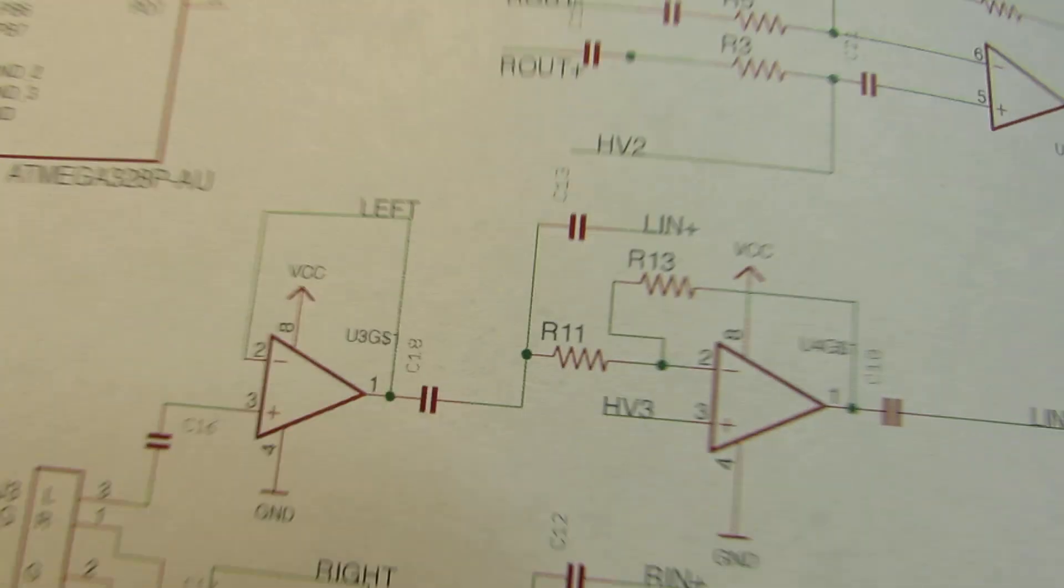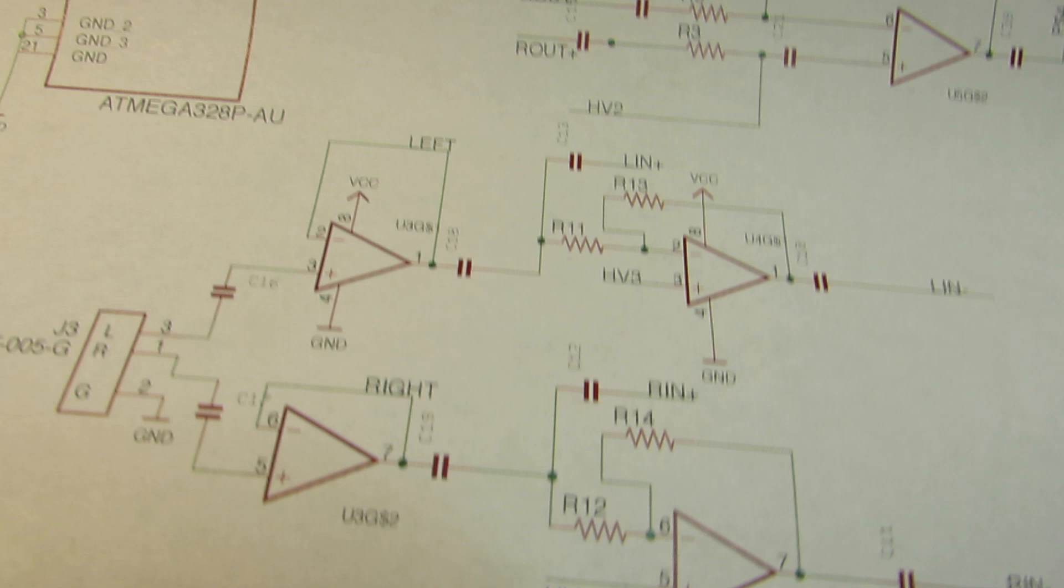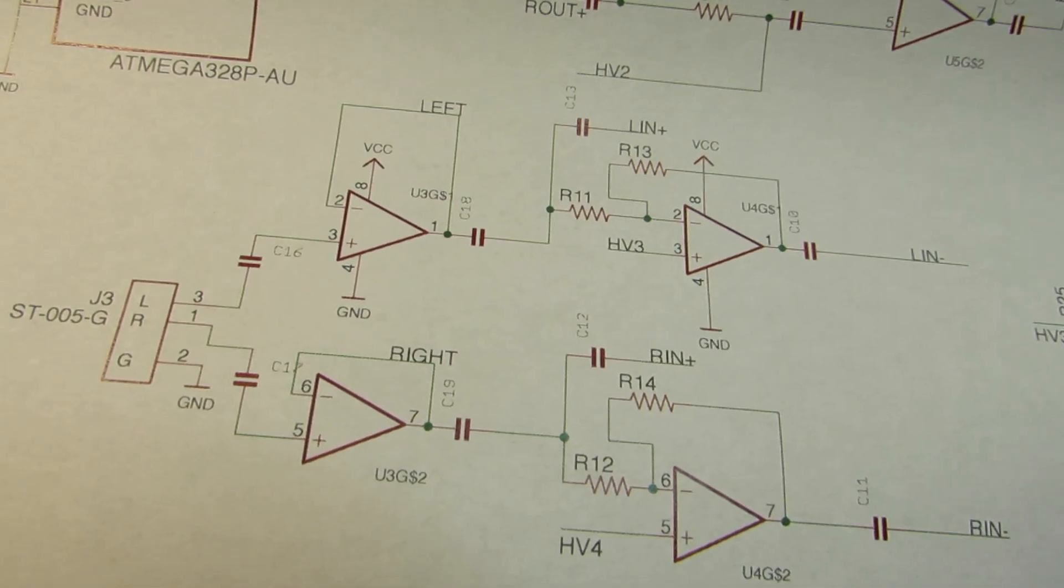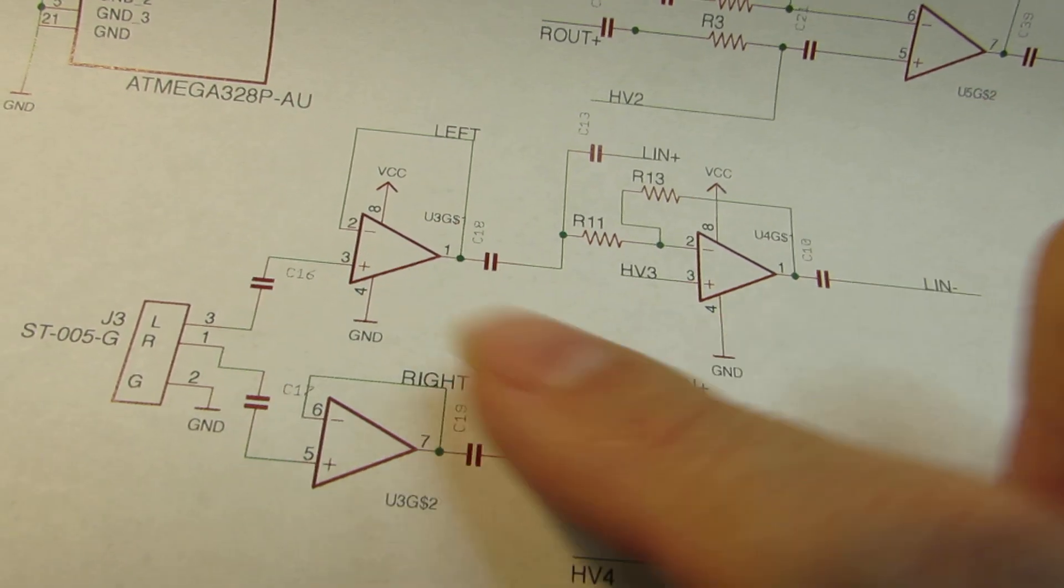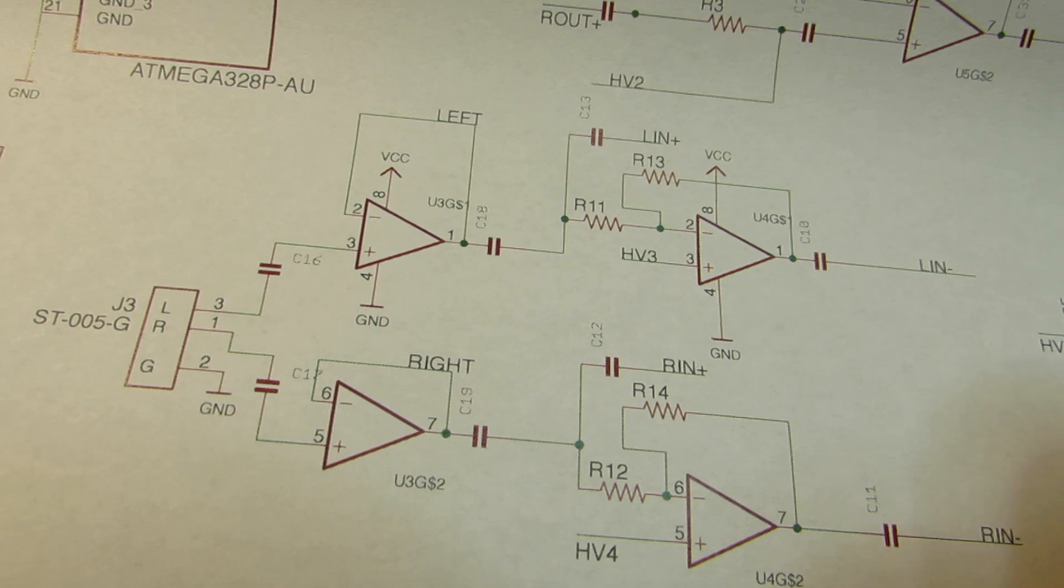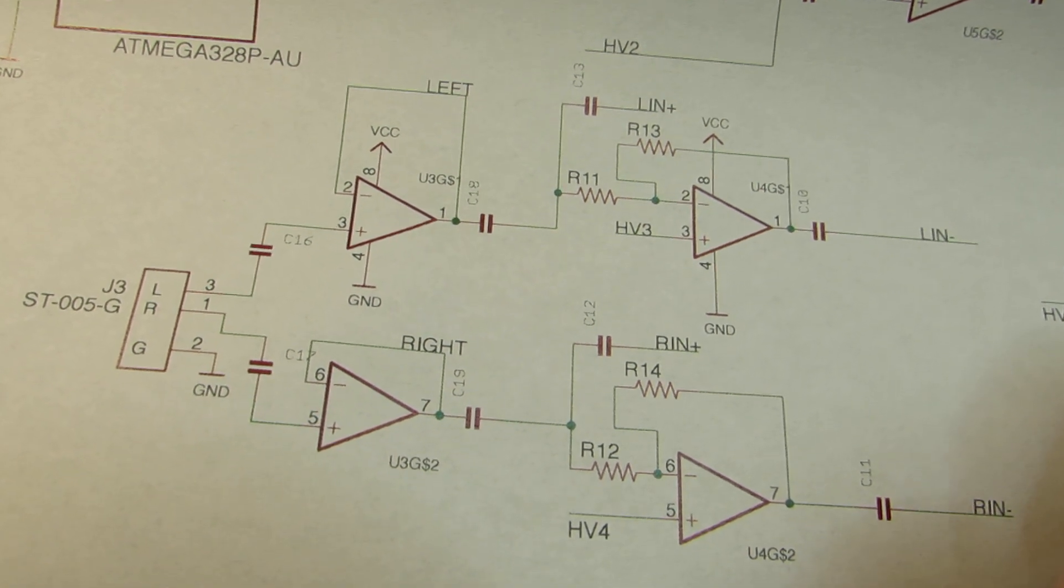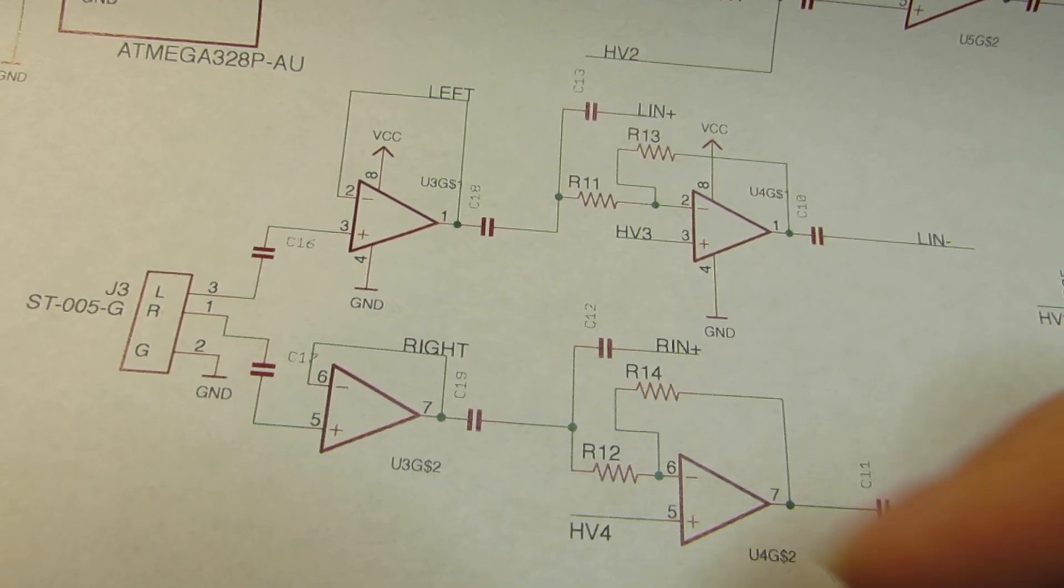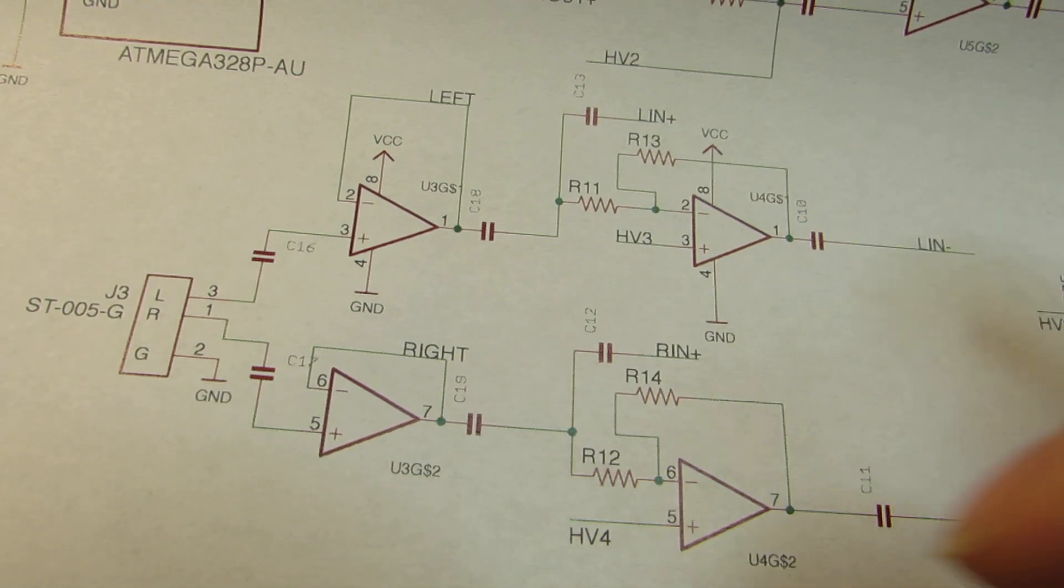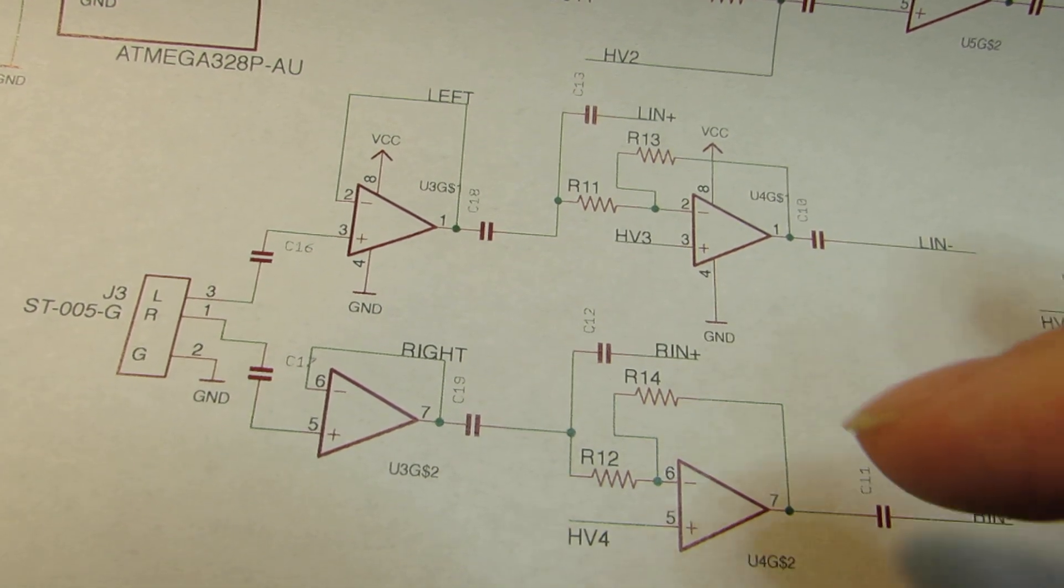So I made the non-inverting and inverting signal by the combination of two operational amplifiers. And of course, we need to make it by the single voltage operation. So I applied some half-voltage for the required point.